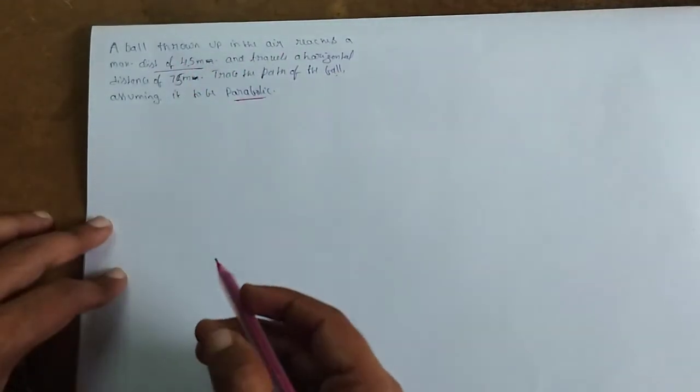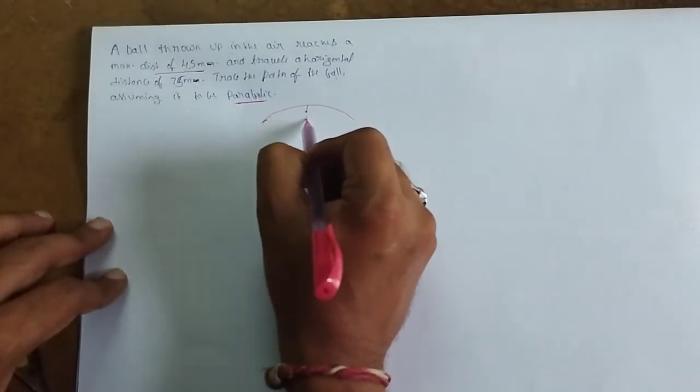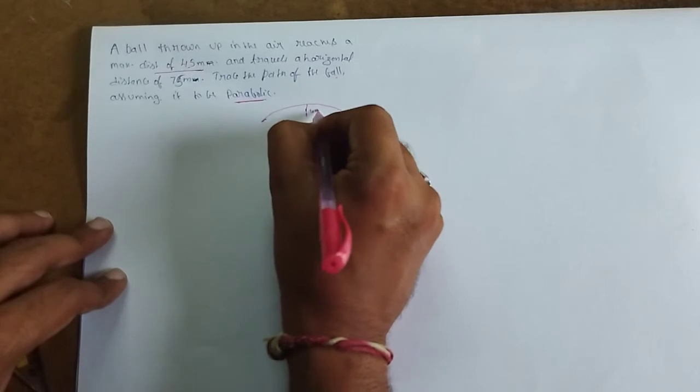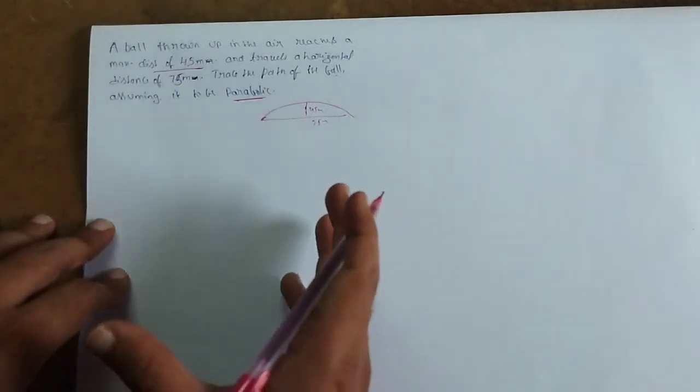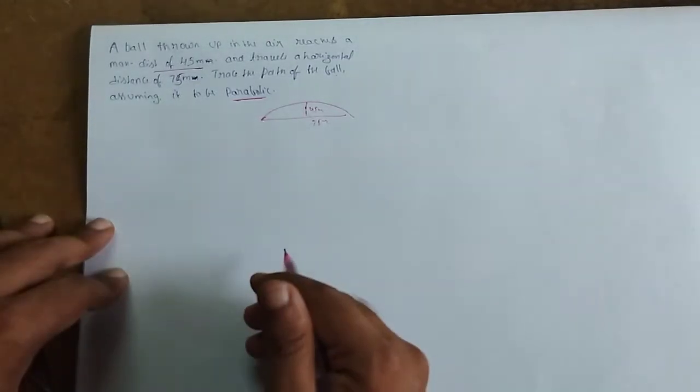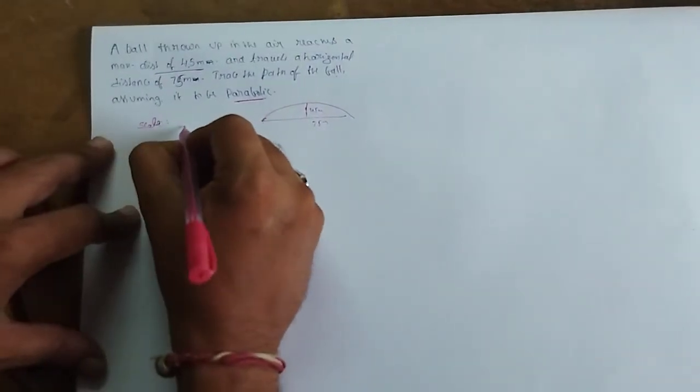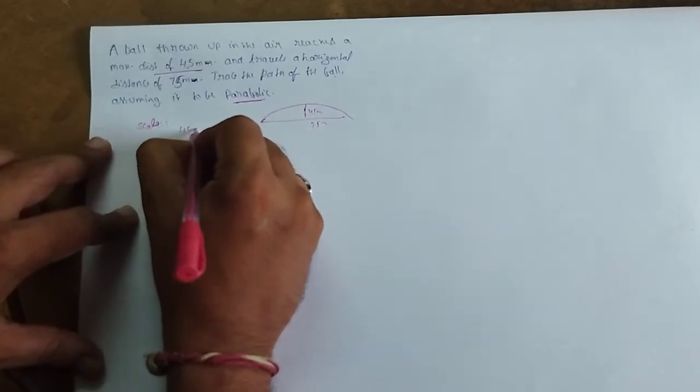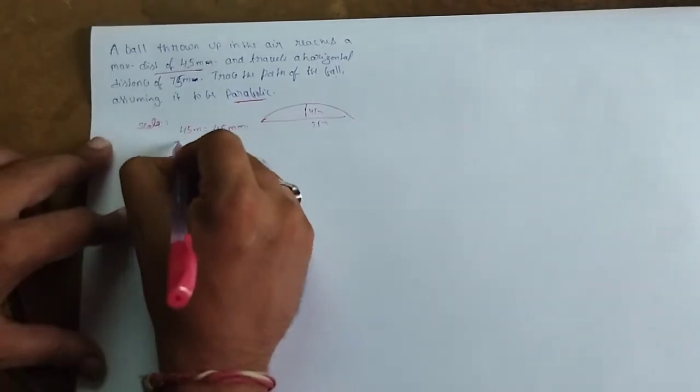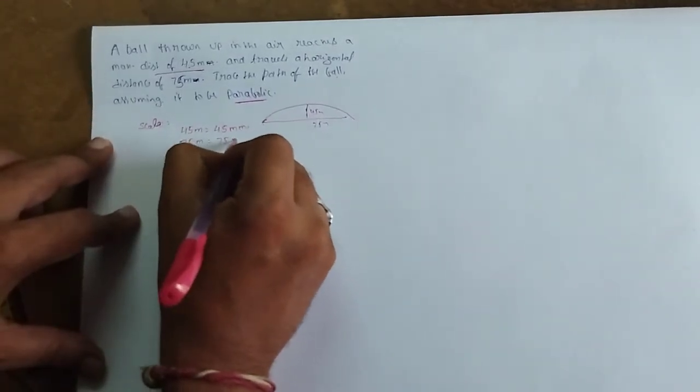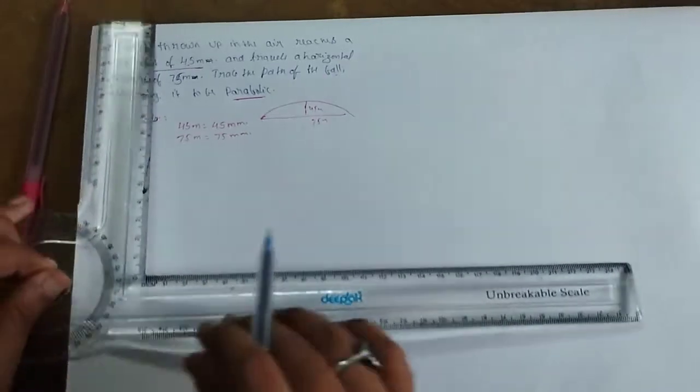First of all, ball thrown up reaches a maximum distance of 45 meters - that's the maximum height - and the total horizontal distance is 75 meters. Since we need to fit this on our drawing sheet, we will take a scale. I am using 45 meters as 45mm and 75 meters as 75mm. So I am using one meter equals one millimeter as the scale.